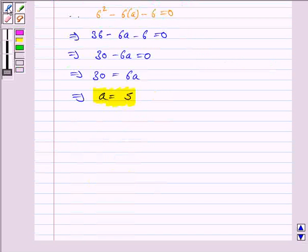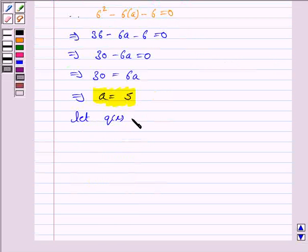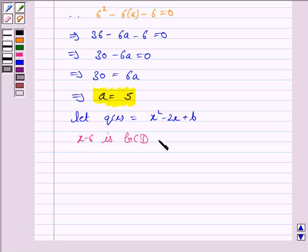Now, again, let Q(x) be equal to x squared minus 2x plus b. We are given that x minus 6 is the GCD of Q(x). Therefore, again, Q at x equals 6 is 0.